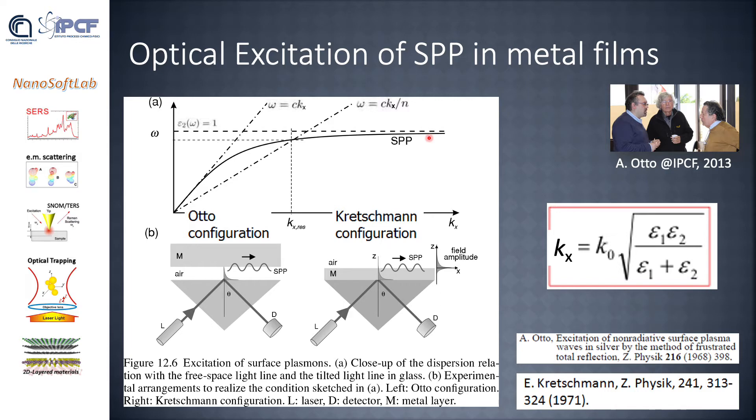In order to couple light into a SPP wave, we need to exploit some specific configurations: the Otto configuration and the Kretschmann configuration. In these two configurations, instead of shining light directly onto the metallic film, we use an evanescent wave. The evanescent wave is generated at the surface between a glass prism and air, and then in the near field we put the metallic film—this is the Otto configuration. In a more easy way we can deposit directly the metallic film on top of the glass prism, and in this case we can excite directly the SPP through the evanescent wave that generates at the surface between the glass and the metal.